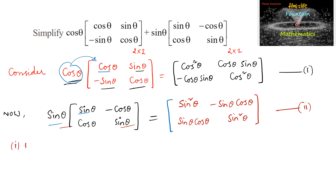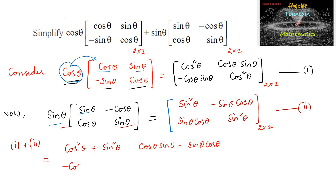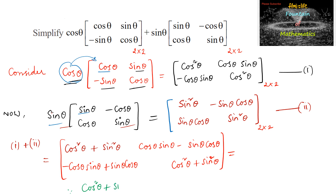Now adding matrix 1 and matrix 2. Both matrices are 2×2, so we add corresponding elements. The first element is cos²θ + sin²θ. Next, cos θ sin θ minus sin θ cos θ. Then minus cos θ sin θ plus sin θ cos θ. And finally cos²θ + sin²θ. On simplifying, using the trigonometric identity cos²θ + sin²θ = 1.